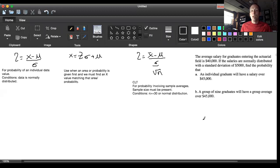The average salary in part A: the average salary of graduates entering the actuarial field is $40,000. The salaries are normally distributed with a standard deviation of $5,000. Find the probability that an individual graduate will have a salary over $45,000.